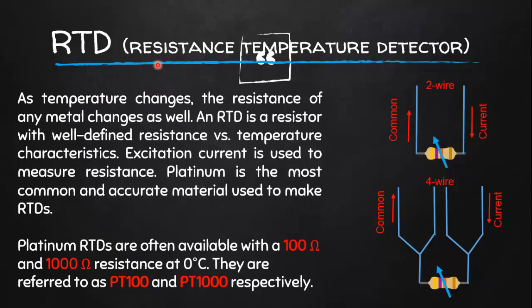Next come RTDs, or Resistance Temperature Detectors. As the temperature changes, the resistance of any metal changes as well. An RTD is a resistor with a defined resistance versus temperature characteristic, meaning its resistance changes with temperature, and it requires an excitation current to measure the resistance. Platinum is the most common and accurate material used to make RTDs. Platinum RTDs, also known as PRTDs, are often available with 100 ohm and 1000 ohm resistance at 0°C, referred to as PT100 and PT1000 respectively.